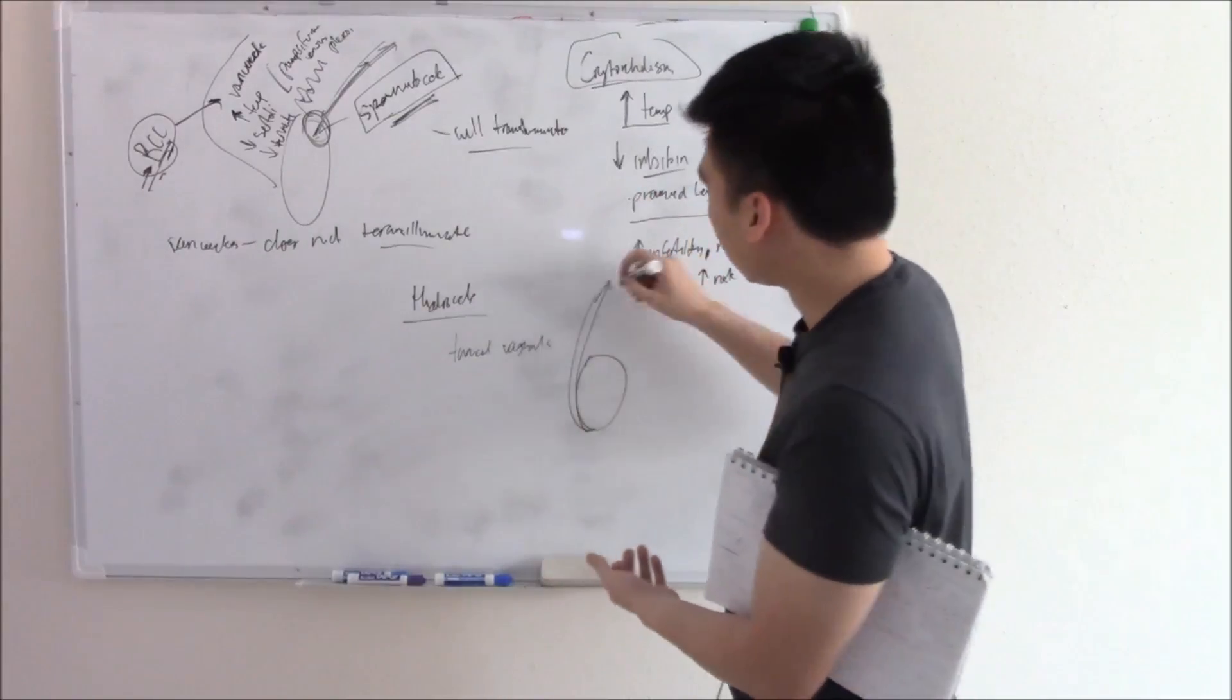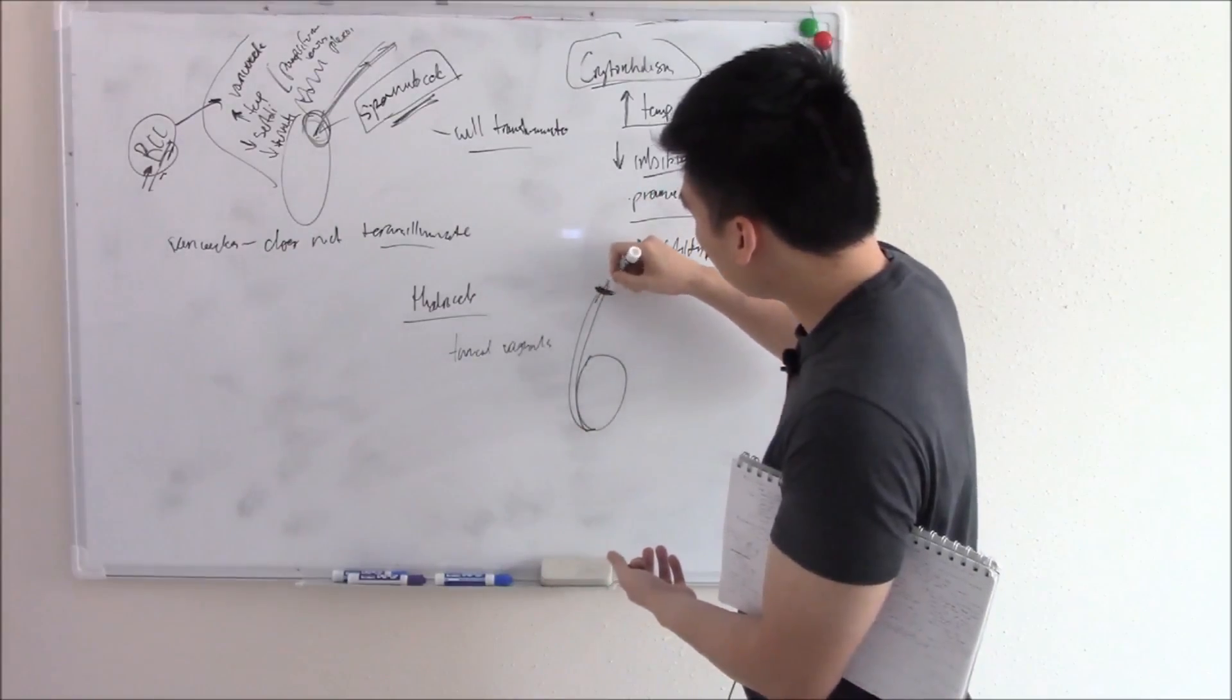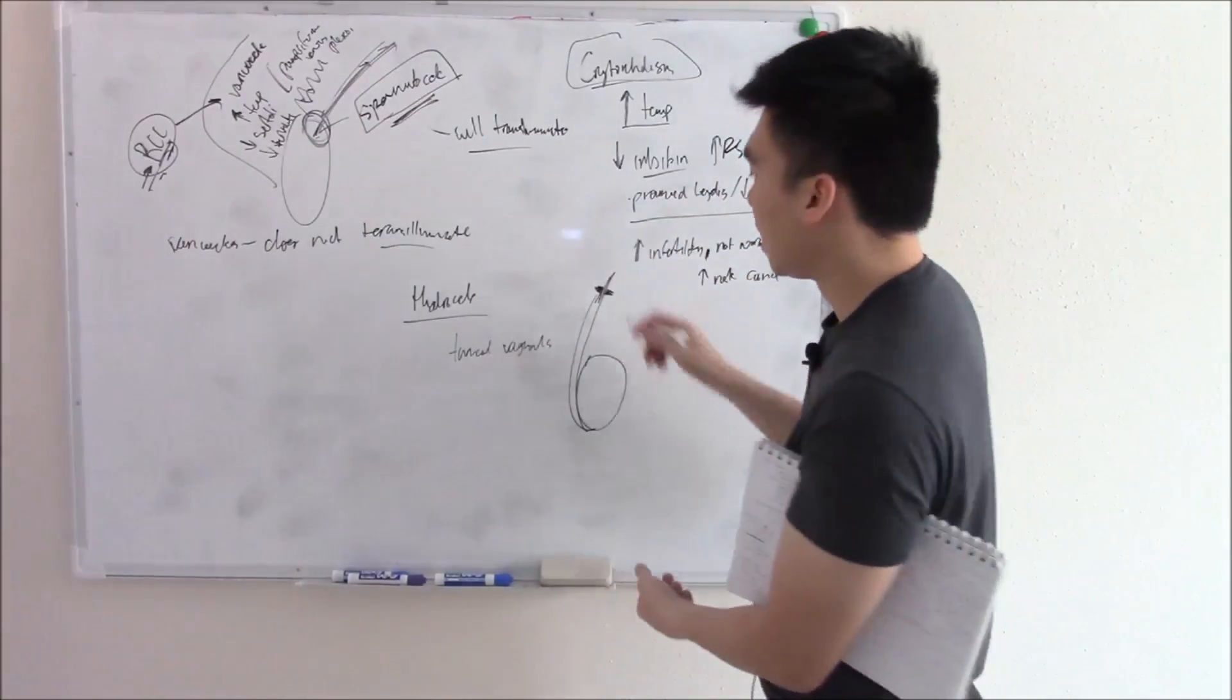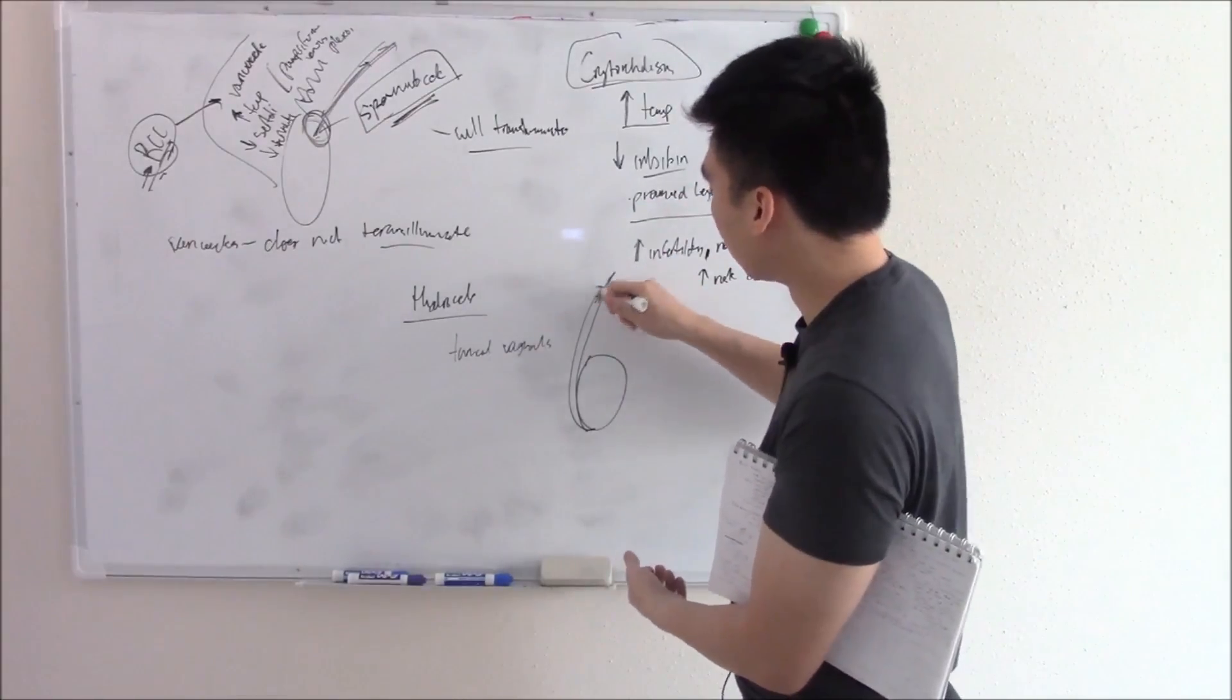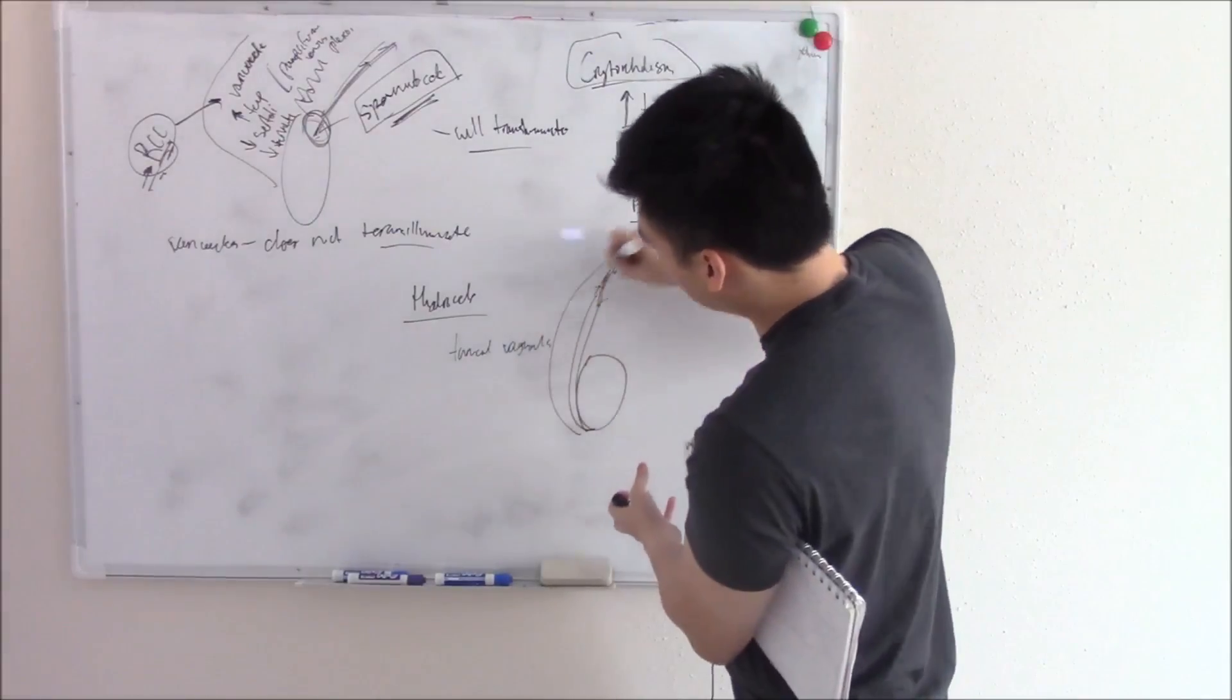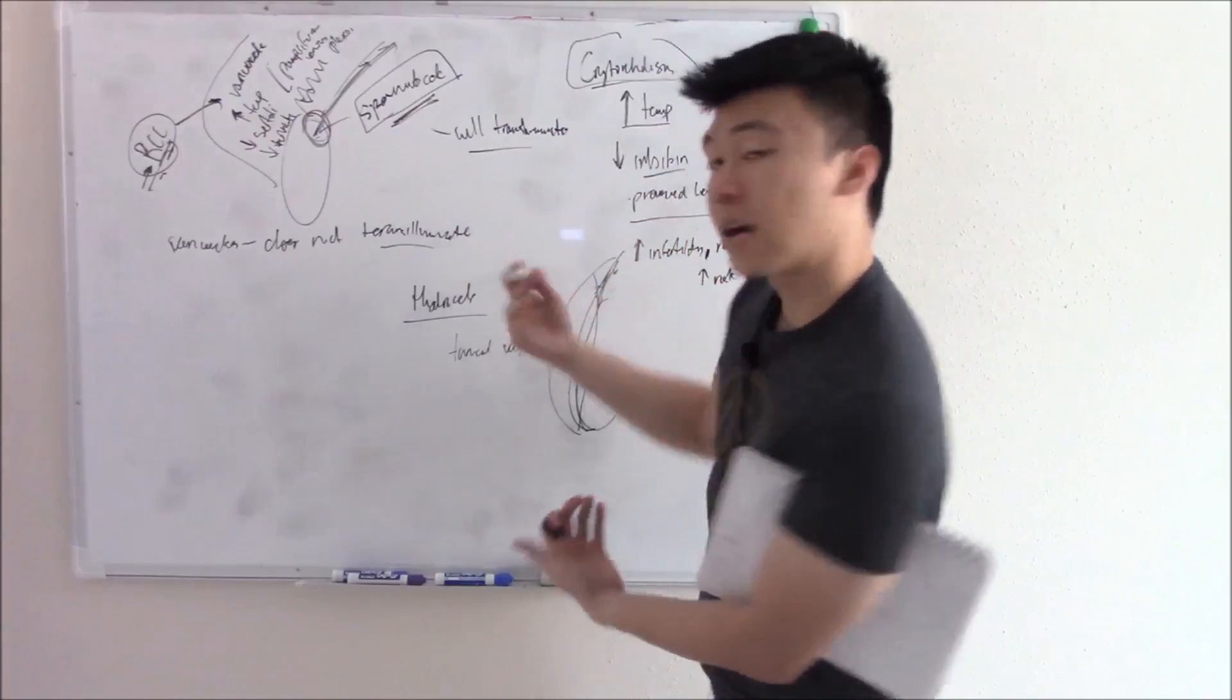And then after it's descended, the top part will obliterate and close that continuation with the peritoneum. If it doesn't obliterate and it doesn't close that, then it'll keep the process open and then serous fluid can drain into it and dilate this and cause a hydrocele.